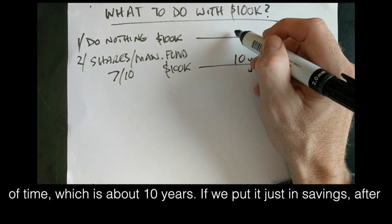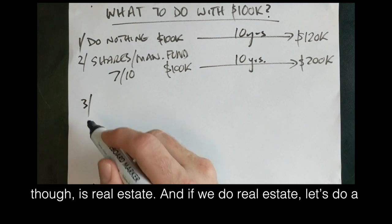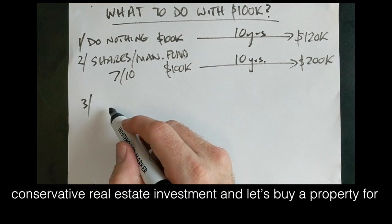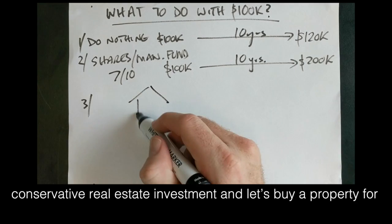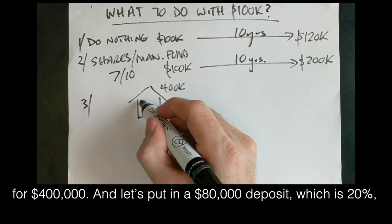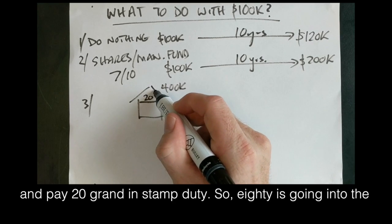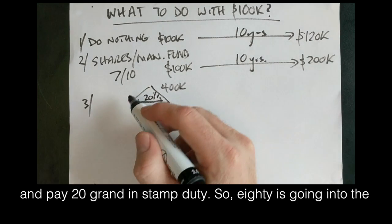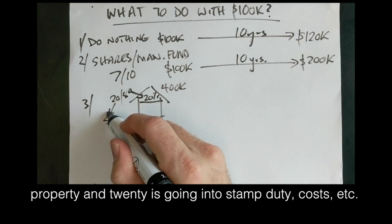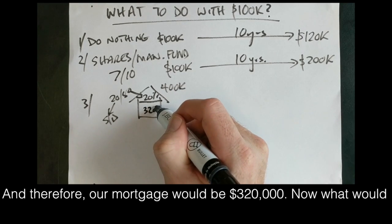If we put it just in savings, after 10 years, we get about that. Now the third thing we could do though is real estate. And if we do real estate, let's do a conservative real estate investment and let's buy a property for $400,000. And let's put in an $80,000 deposit, which is 20%, and pay $20,000 in stamp duty. So $80,000 is going into the property and $20,000 is going into stamp duty costs, and therefore our mortgage would be $320,000.